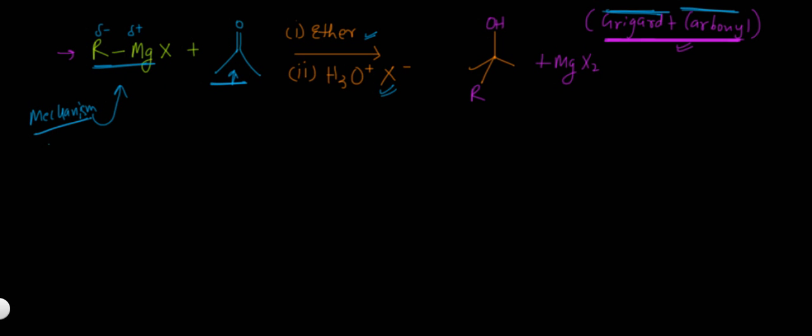So this is a simple two-step reaction. Step one, I'm going to write now. What happens in step one is that the hydrocarbon part of the Grignard reagent attacks on the carbonyl compound.